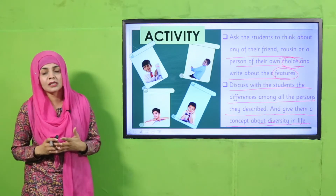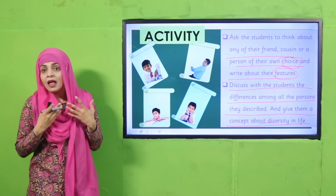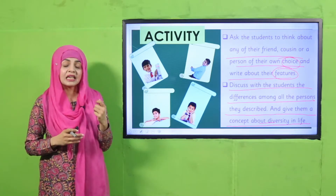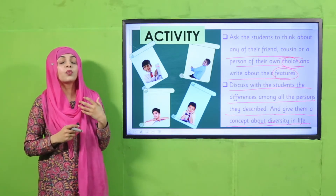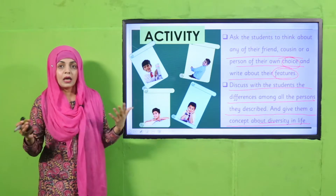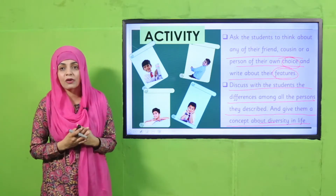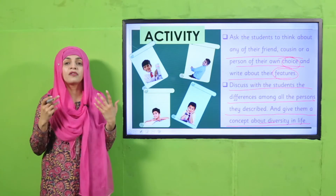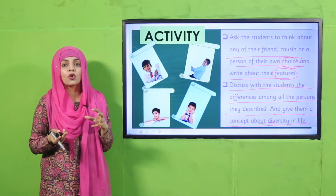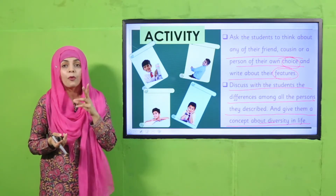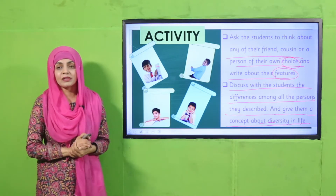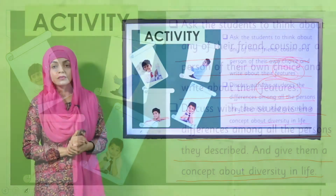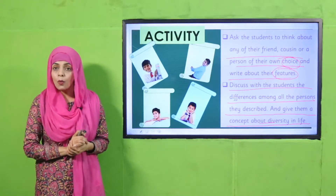These are the characteristics and features you can clearly and visibly notice. Then think: what were the varieties among the different people you described? How are they different from each other? This variety is called diversity. Now pause the video and finish the activity.